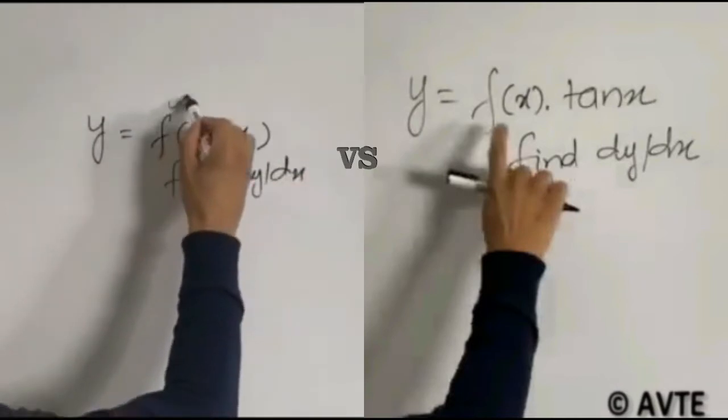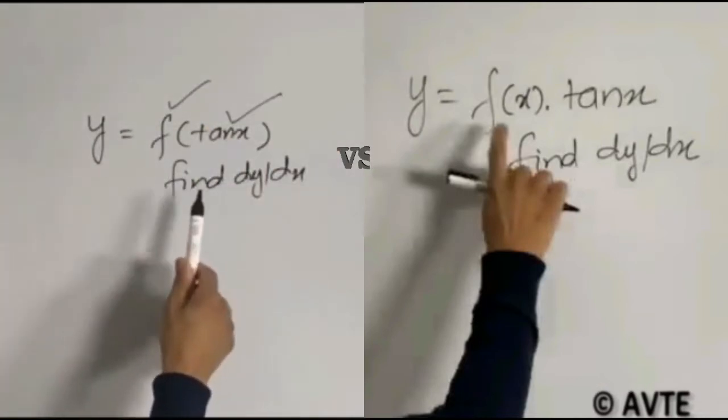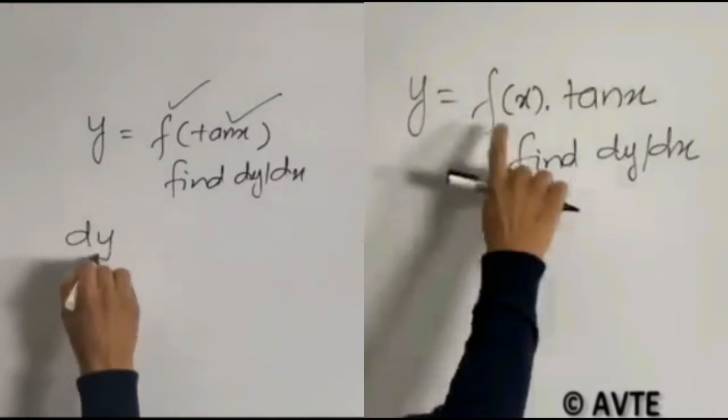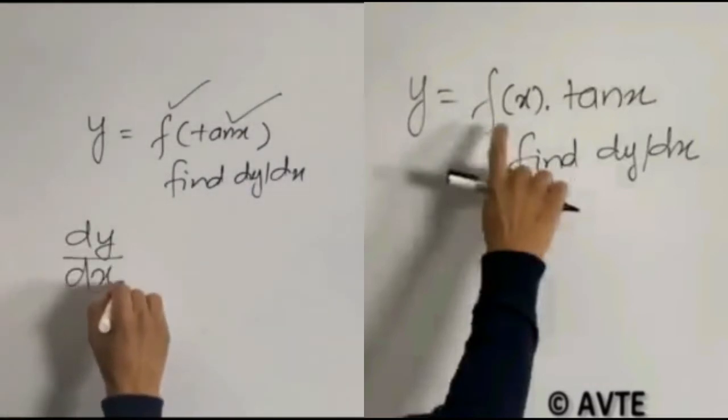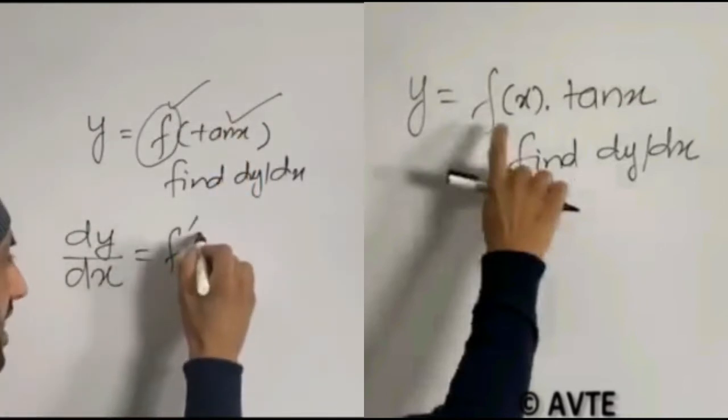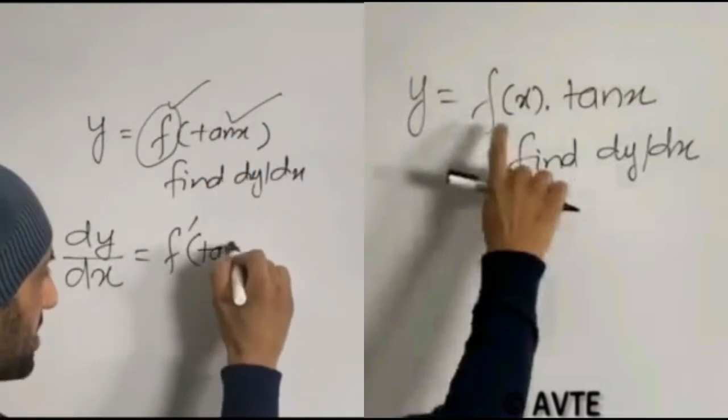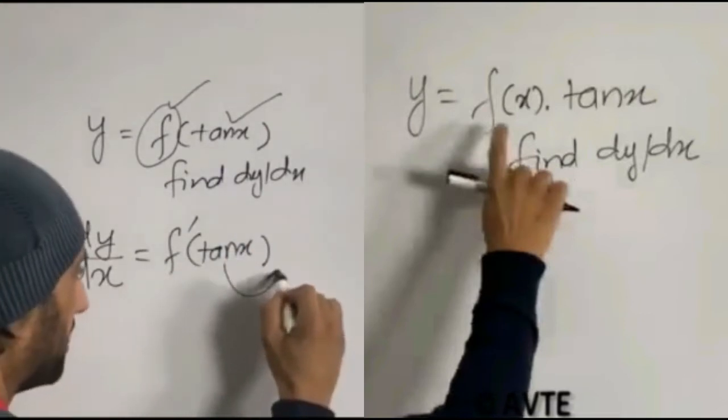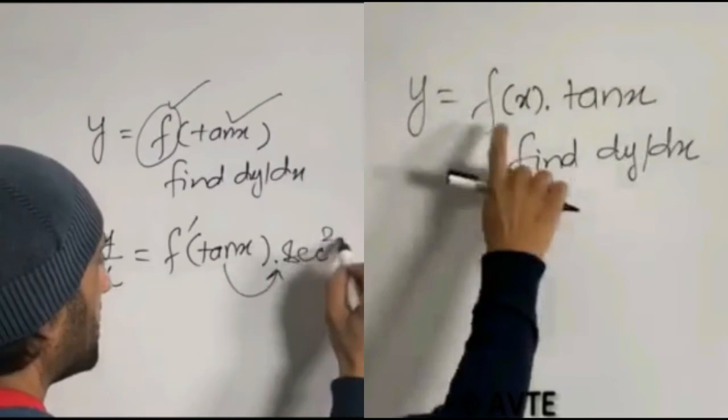Remember this is the function of tan x and when they say find the derivative it is very simple. You simply write differentiating y with respect to x, then you do the derivative of a function which is f dash. Since it is a function of tan x, this tan x remains the same and then the derivative of tan x is secant square x.